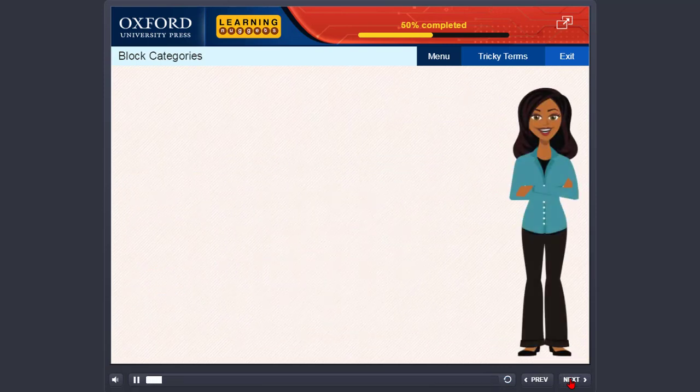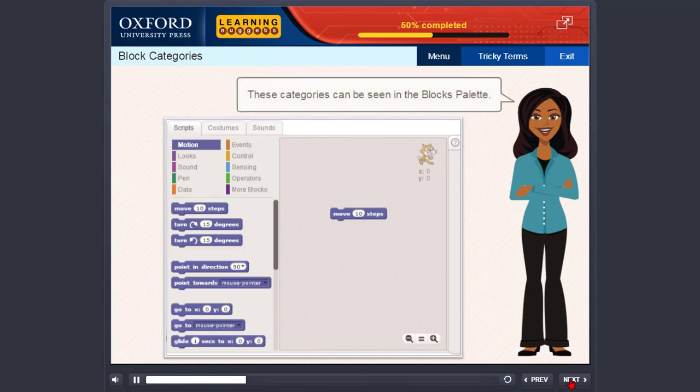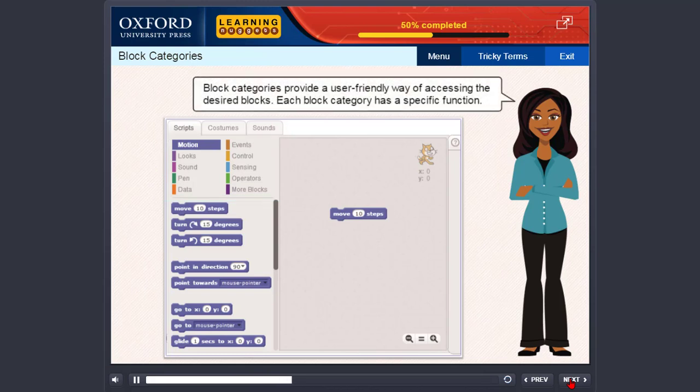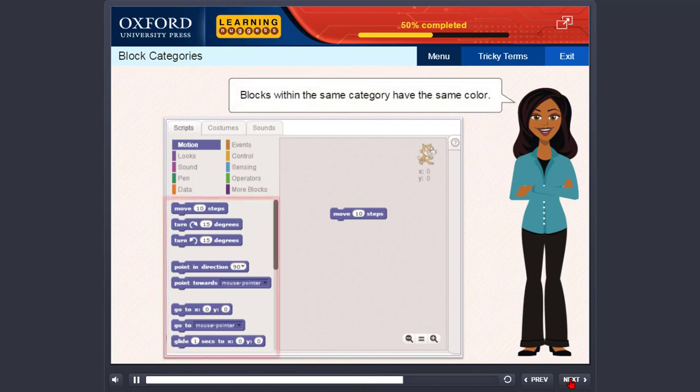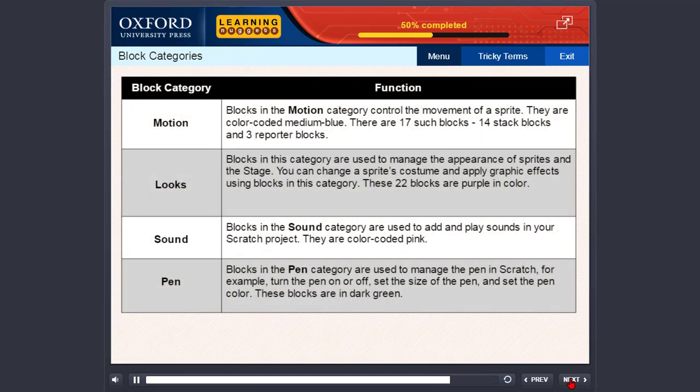Block categories. In Scratch, the blocks appear in 10 categories, with each category having a specific color. These categories can be seen in the blocks palette. Block categories provide a user-friendly way of accessing the desired blocks. Each block category has a specific function. Blocks within the same category have the same color. This table lists the various block categories and the functions of each.